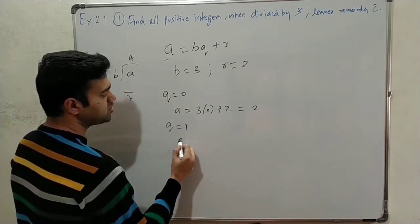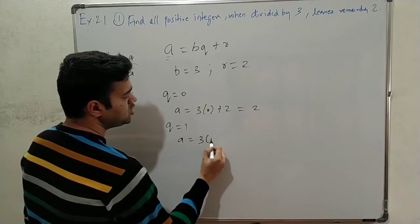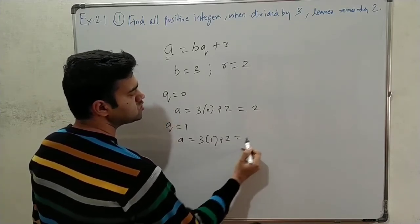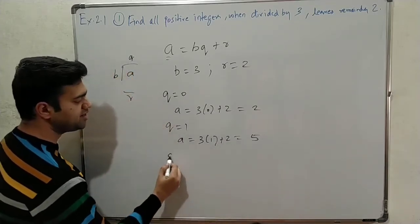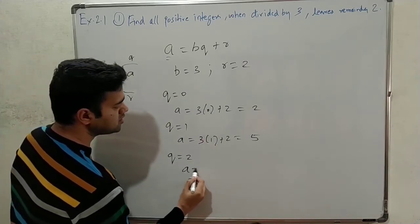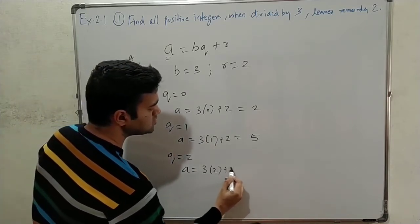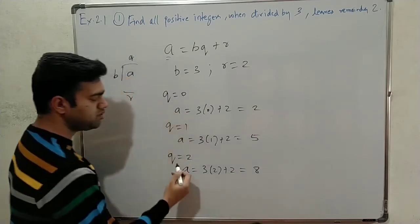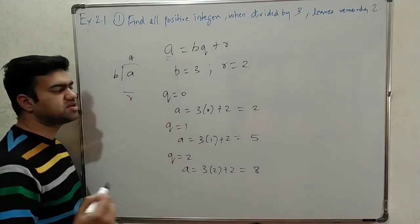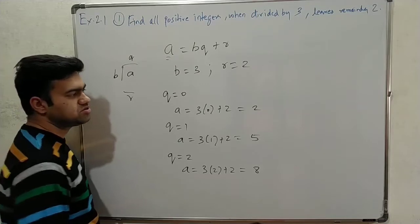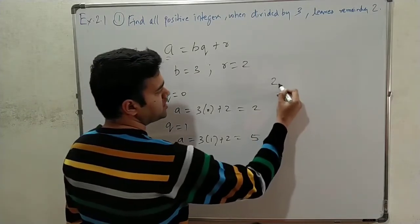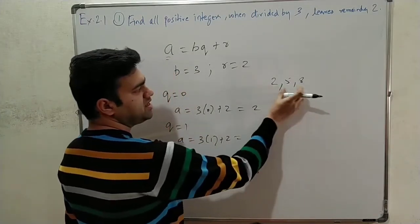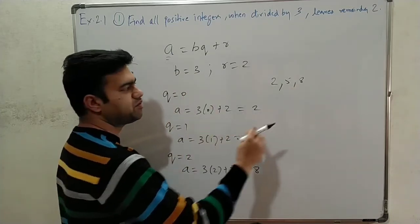Second, quotient Q = 1: A = 3(1) + 2 = 5. Also, quotient Q = 2: A = 3(2) + 2 = 8. Quotient Q = 3: A = 3(3) + 2 = 11.